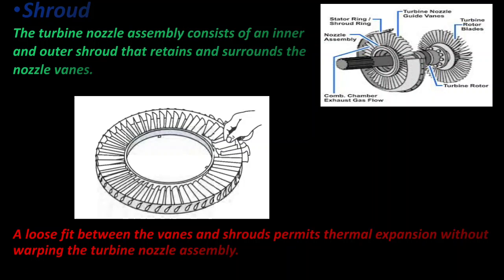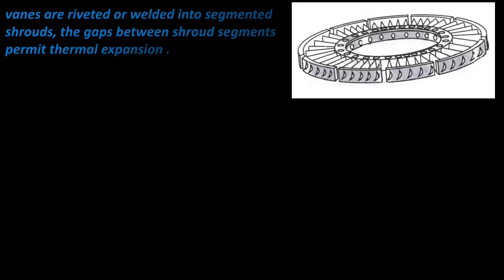There is a second method of attaching nozzle vanes, which is to rigidly weld or rivet the vanes into the inner and outer shroud. To enable thermal expansion, the inner and outer shroud ring is cut into segments. As thermal expansion takes place, the shroud expands and closes the gap between shroud segments. Now you can see here in this picture vanes are riveted or welded into shrouds, and the gap between shroud segments permits thermal expansion.